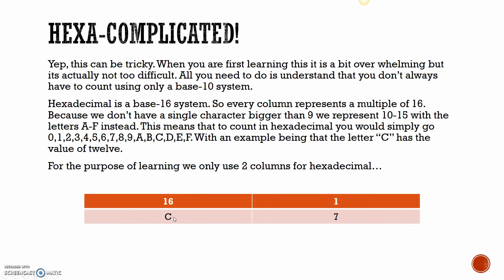For the purpose of learning, we only use two columns for hexadecimal - if you're doing this in a test, you're generally only going to get two columns. The hexadecimal number C7: we know we have 7 sets of 1, and C represents 12, so we've got 12 sets of 16. What is 12 times 16? Plus 7 sets of 1 - so 12 sets of 16 plus 7 sets of 1. When you've got the answer, feel free to post it below in the comments section. If you know you've got the right answer, then you're on the right track.